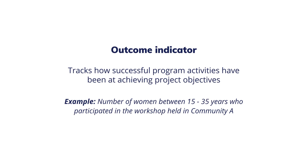Outcome indicators track how successful program activities have been at achieving project objectives. Unlike process indicators, these indicators focus more on what the project is trying to achieve rather than how it is being achieved.